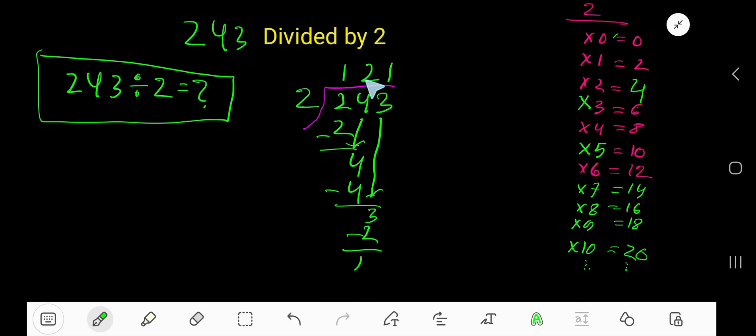So our answer is 121 remainder 1. But if we want to write our answer in decimal form, then what will happen? Just take a decimal point and add 0 here. That is, you are converting this whole number into a decimal number. Bring down the first 0. You can add any number of zeros.